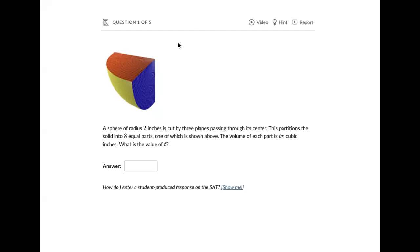It says a sphere of radius two inches is cut by three planes passing through its center. So let's actually pause there because I want to make sure we can visualize what's happening. This is the center of the sphere and you'll notice if we were to extend this almost like a three-dimensional xyz plane you would see the three different planes that they're talking about. So if you envision the sphere being continued on, and they cut it this way, that's how they got those eight different parts that is coming up.